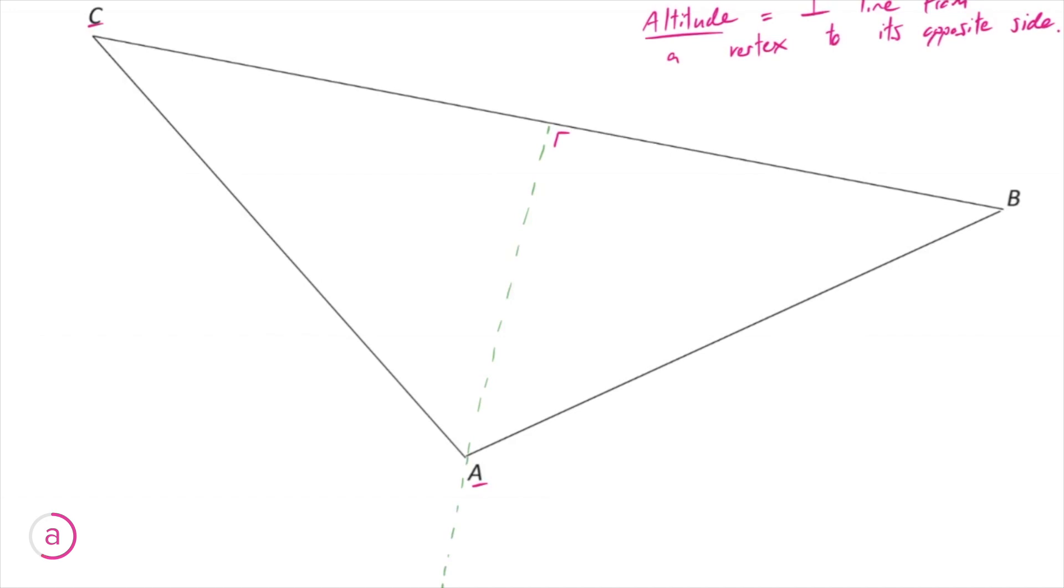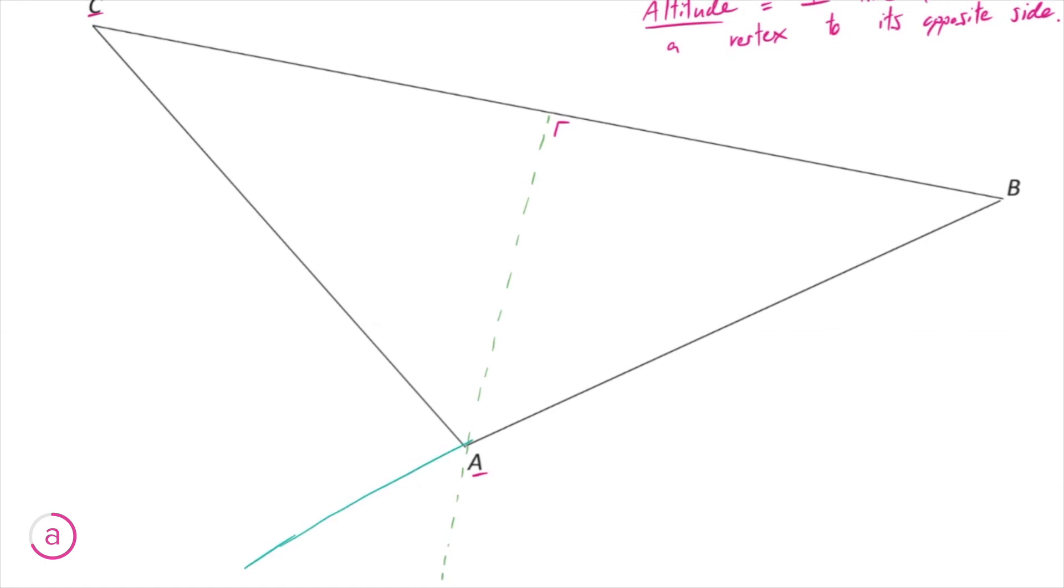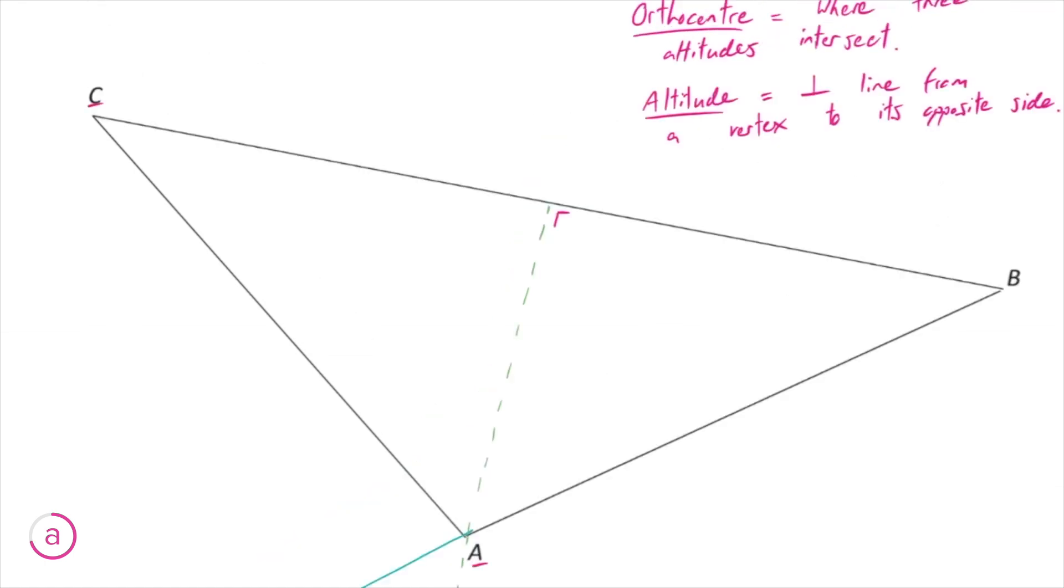One problem we're going to run into is that there's actually no point we can draw the perpendicular from B to A, because it doesn't go far enough across. So we're just going to extend BA, like that, out past where it actually ends. And this is perfectly fine. This will happen quite often with orthocenters.